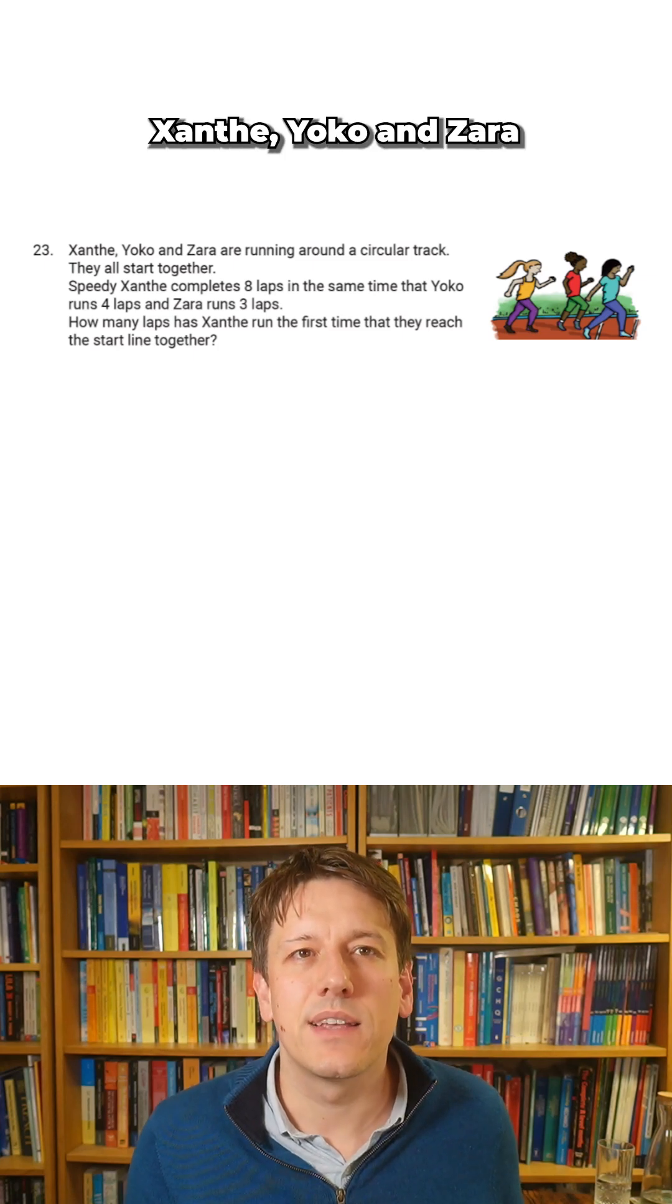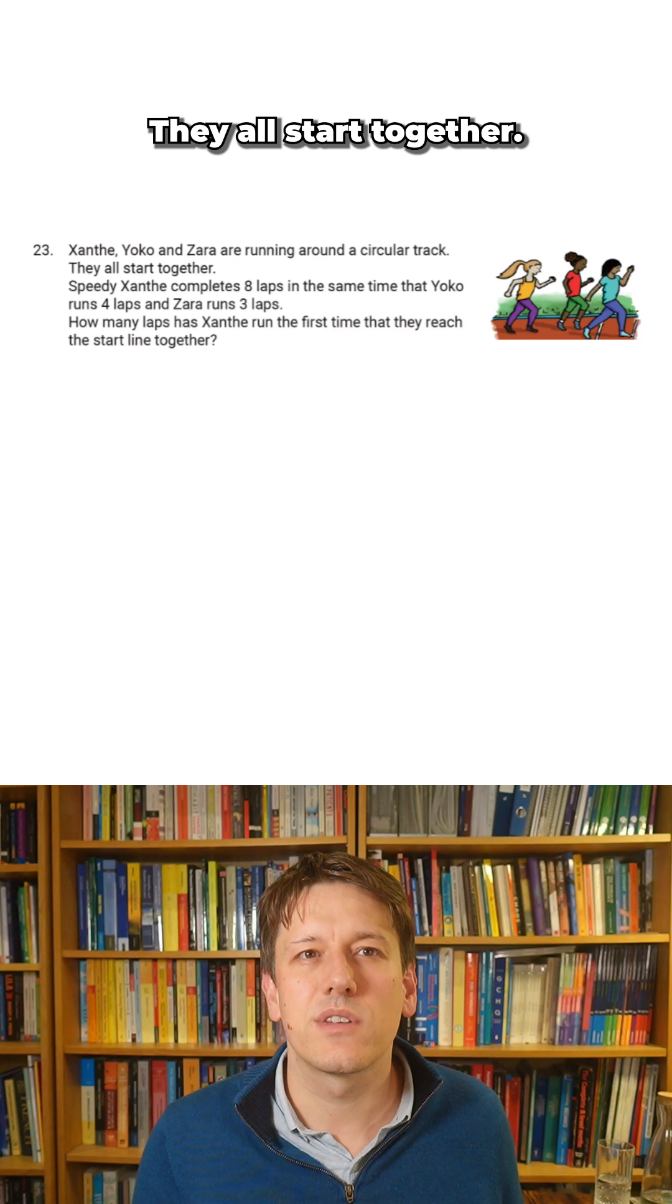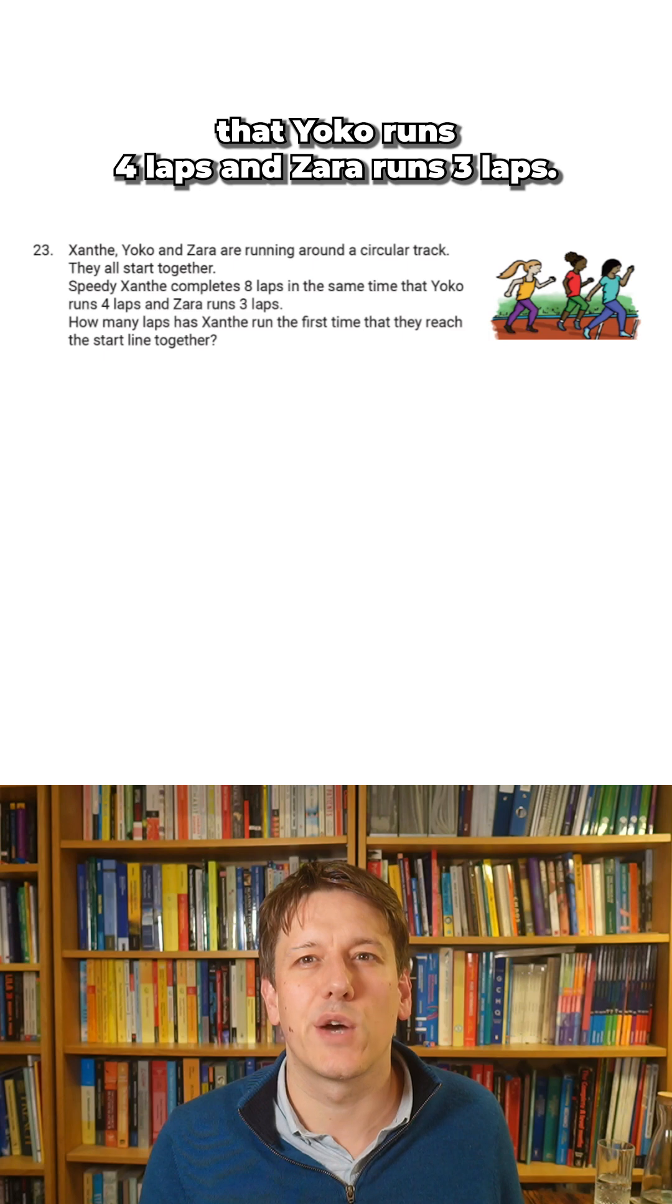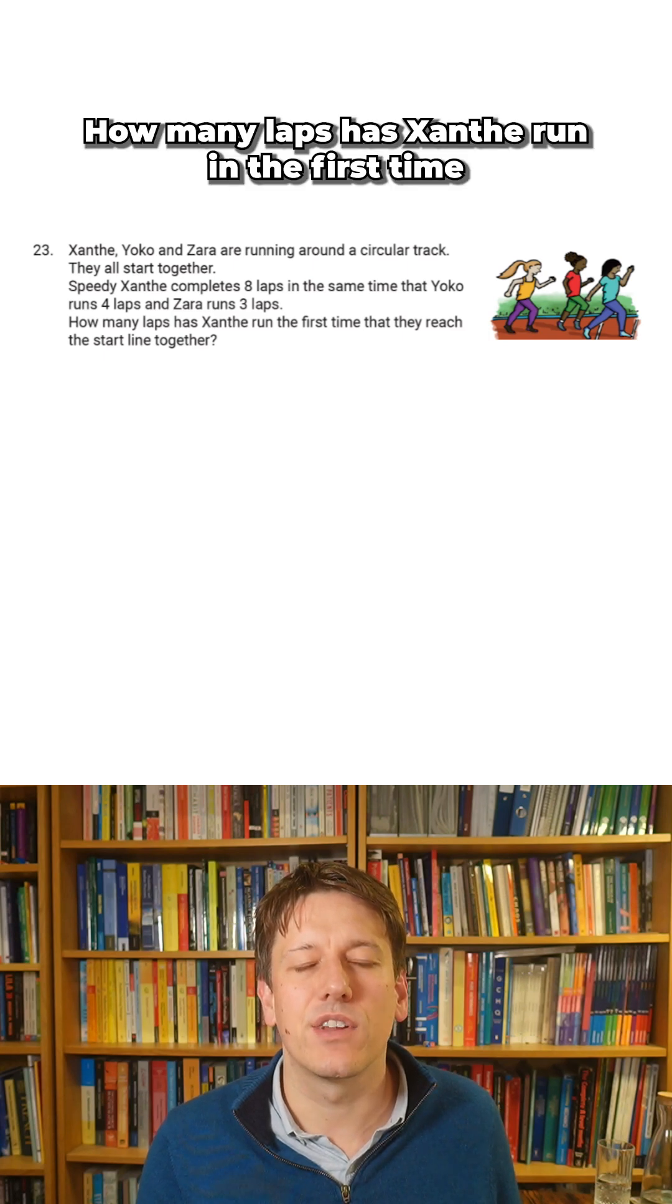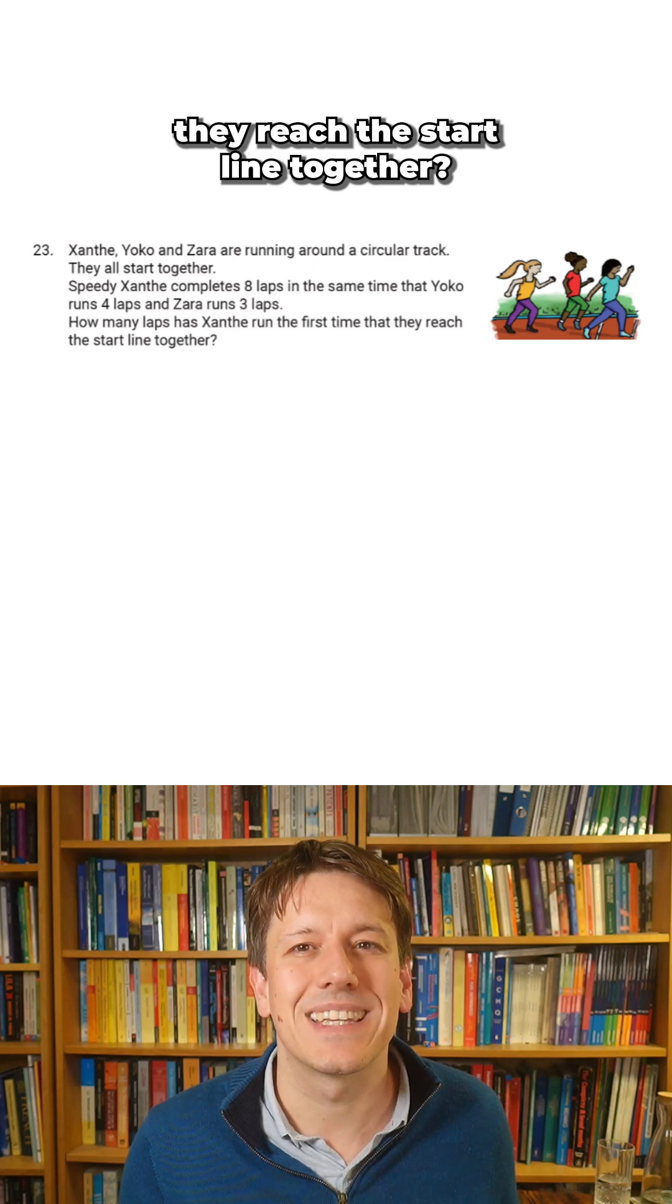Here's question 23. Xanthe, Yoko and Zara are running around a circular track. They all start together. Speedy Xanthe completes eight laps in the same time that Yoko runs four laps and Zara runs three laps. How many laps has Xanthe run the first time they reach the start line together?